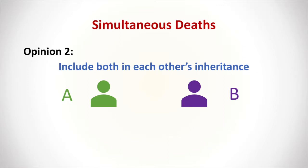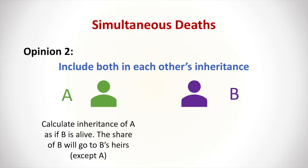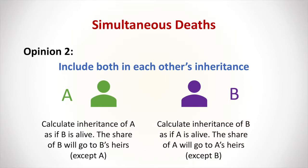The second opinion says that we include both people in each other's inheritance. When we calculate the inheritance for A, we consider as if B was alive at the time of death of A, and the shares of B will go to the heirs of B. Similarly, when we calculate the inheritance of B, we consider as if A was alive at the time of death of B, and the share A was supposed to get will be distributed amongst the live heirs of A. This opinion is held by one of the schools of Islamic jurisprudence.